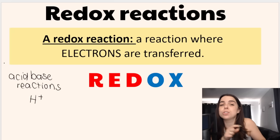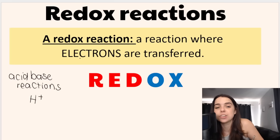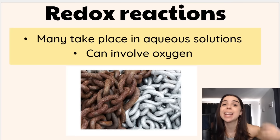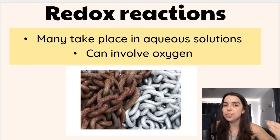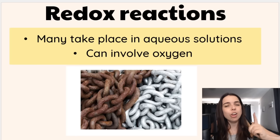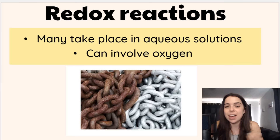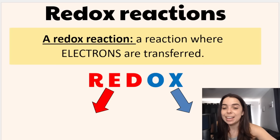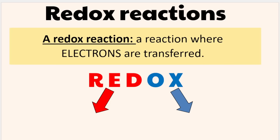Redox reactions involve the transfer of electrons, which are negatively charged particles. A large number of redox reactions take place in aqueous solutions, but they're not limited to these types of solutions. A lot of students think redox reactions always involve oxygen — and many do involve oxygen, that's how we get rust — but not all of them involve oxygen. That's why when you are asked to define a redox reaction, you need to define it as a reaction where electrons are transferred.